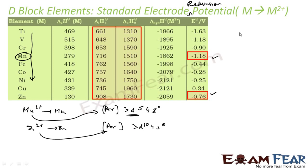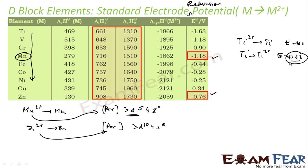A higher negative value of standard electrode potential implies easier oxidation. For example, for titanium: Ti²⁺ + 2e⁻ → Ti has E° = minus 1.63 V. If you reverse the reaction — Ti → Ti²⁺ — E° becomes plus 1.63 V. Since this is positive, the oxidation reaction is easy. So, the more negative the standard electrode potential, the easier the oxidation of that metal.